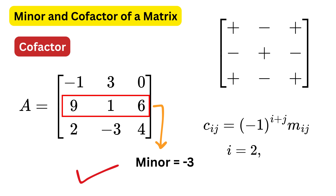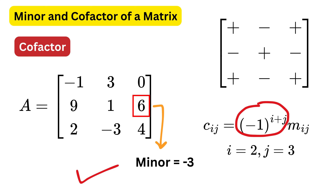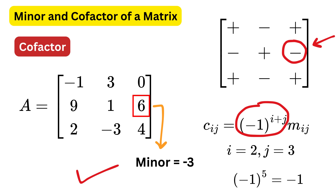For example, if i is 2, which means second row, and j is 3, or third column, then minus 1 raised to i plus j equals minus 1 raised to 2 plus 3, or 5. Since the power is odd, it will be minus 1, which we can also see from the pattern here. Therefore, we multiply minus 1 with the minor of minus 3 that we obtained previously, which gives the cofactor of the element at position row 2 and column 3 as 3.